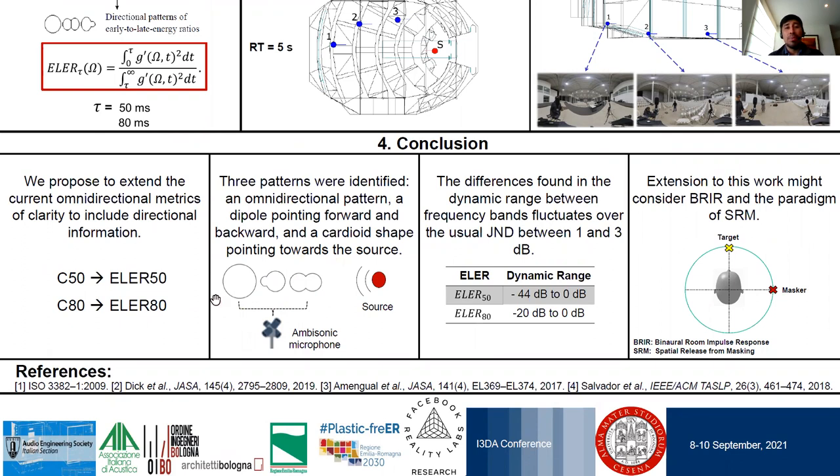omnidirectional, dipole, and cardio shape. The dynamic range found fluctuates over the usual JNDs between 1 and 3 dB.